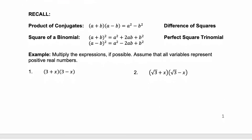Remember from our times of factoring that we would factor the difference of squares — this was also called the product of conjugates, and it's very important with rationalizing a denominator. When you multiply two conjugates, you're left with the first term squared minus the second term squared. The conjugates have identical first terms and the same last term, just with opposite signs. When you do that, you get the difference of squares. You can also recall the square of a binomial: when you square either of these binomials, you end up with a perfect square trinomial.